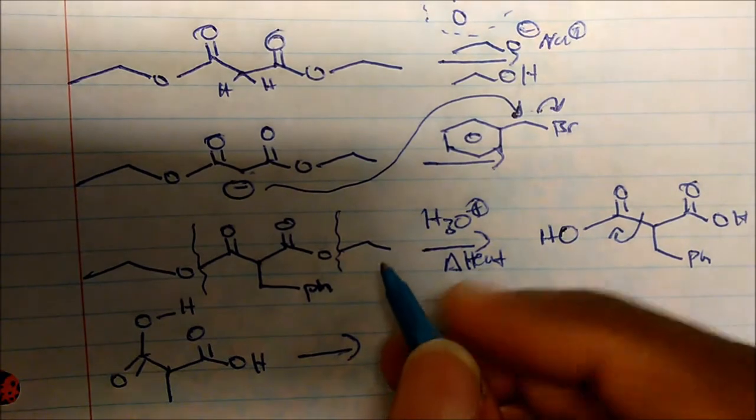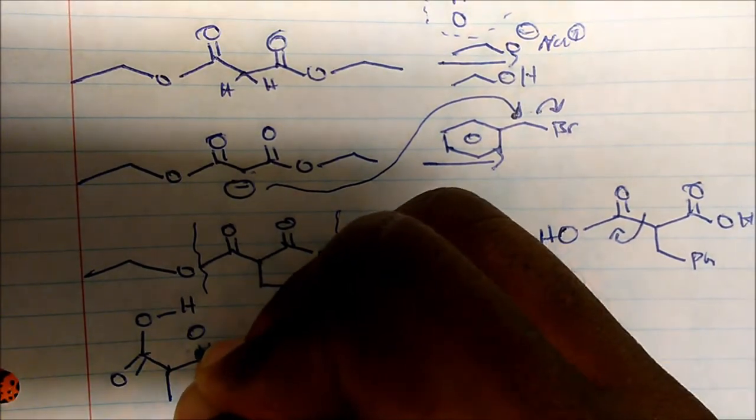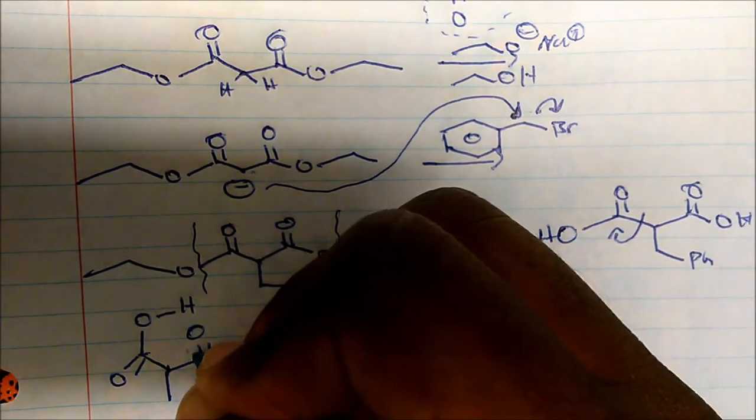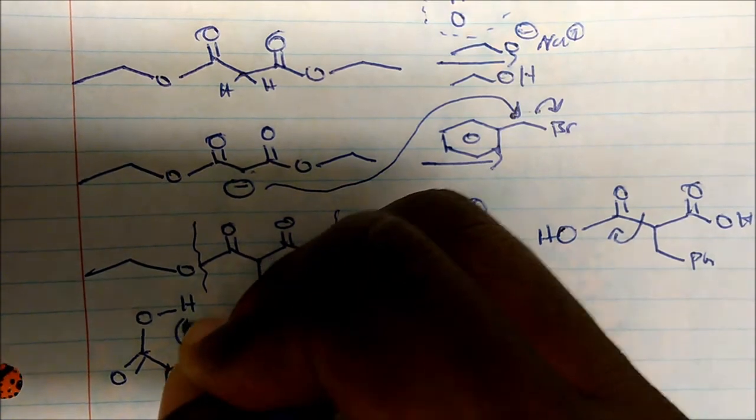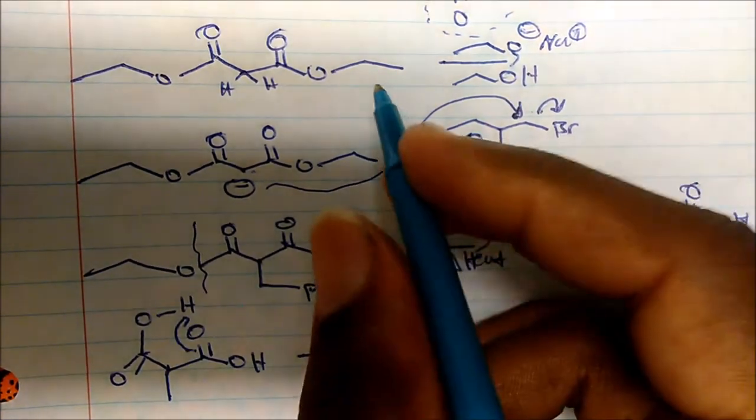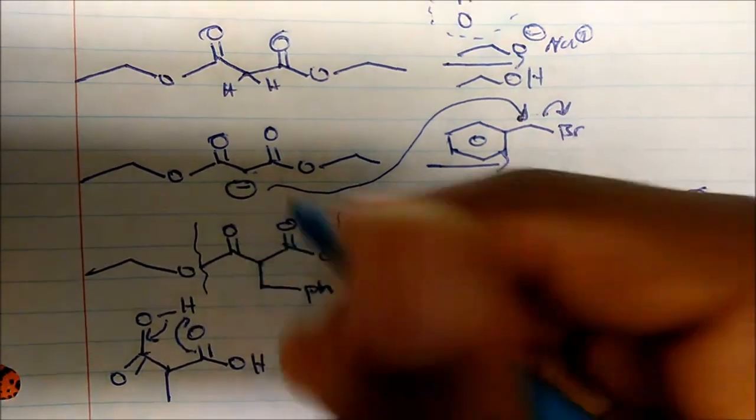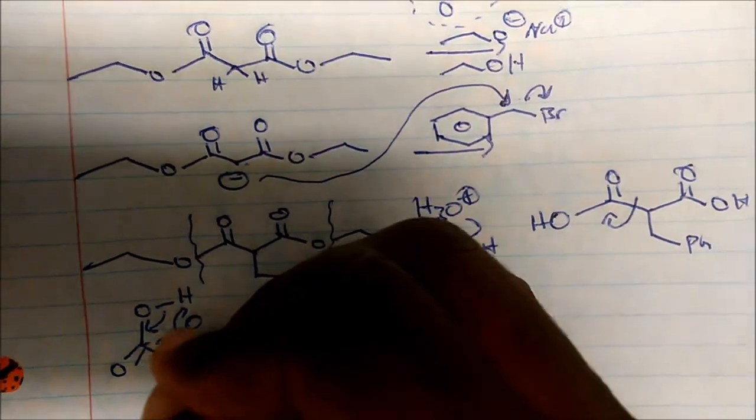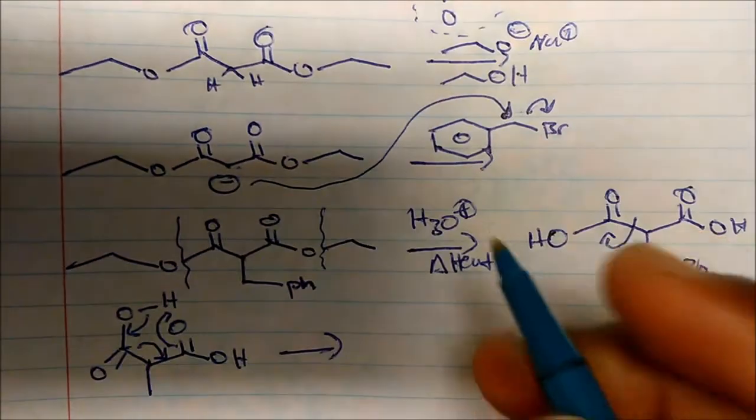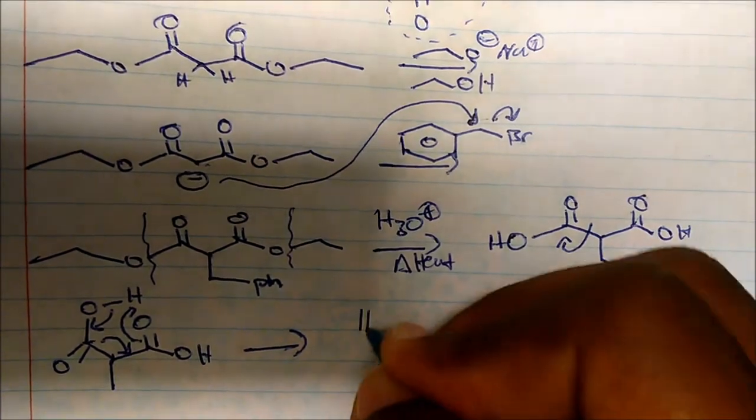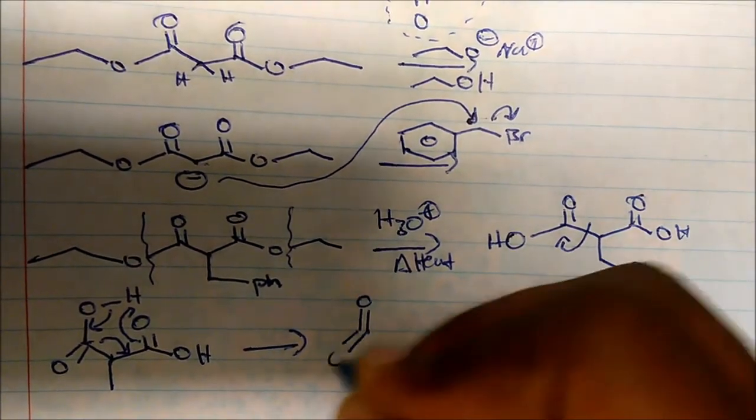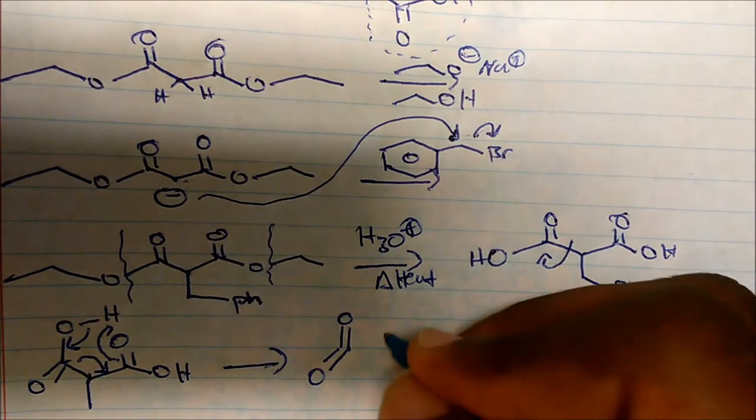And now we say this is just bond breaking and bond making. So the first thing that happens, this pi bond is going to come here and form a bond between the oxygen and the hydrogen. Simultaneously, this bond is going to break to form a double bond there. And this bond is going to break to go here. And so in the process, again, we form CO2.